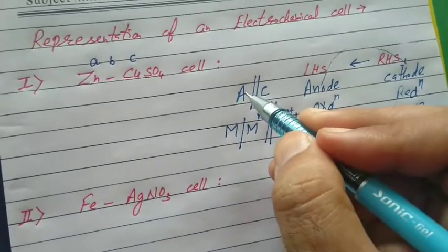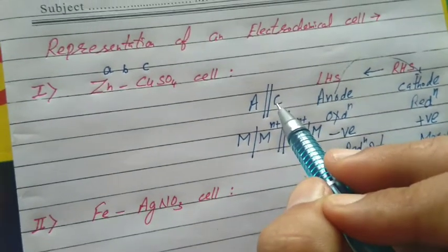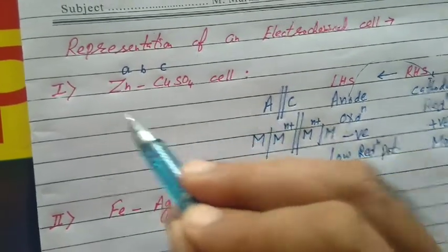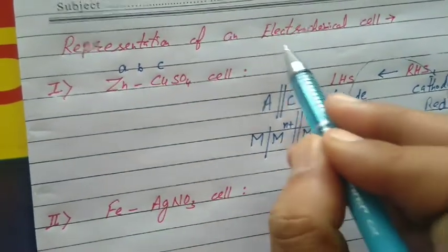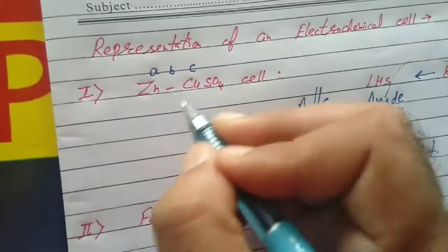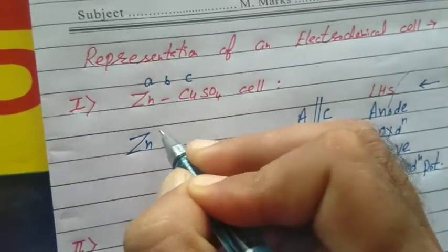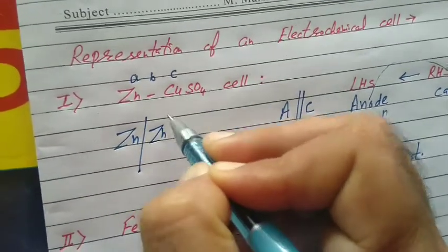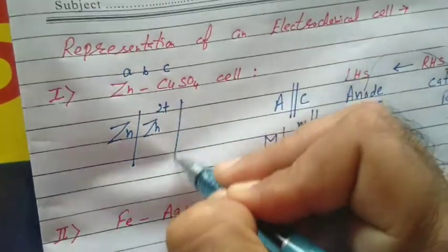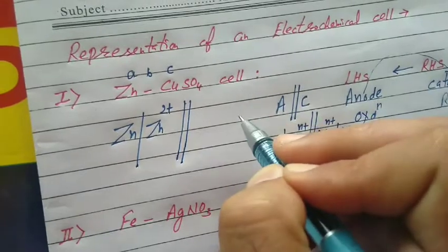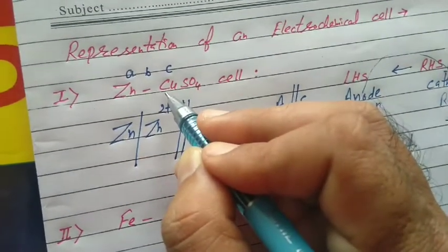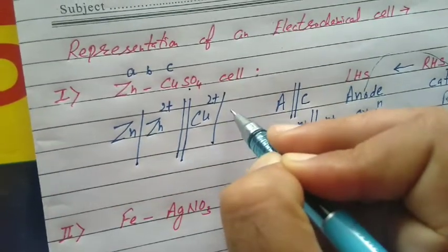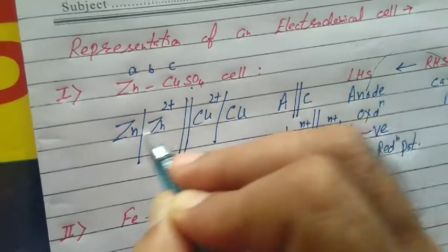At anode, oxidation takes place of the electrode — that is, the metal rod. At cathode, reduction takes place of the cation part of the electrolyte. For example, if the metal at anode is zinc, the electrolyte will be zinc sulfate, so the cation part is Zn²⁺. Then the salt bridge. At cathode, if the counter ion is sulfate²⁻, the cation part is Cu²⁺, which gains electrons and changes to metal. That is the simple way: anode — metal then metal ion — two vertical lines — cathode: cation (metal ion) then metal.